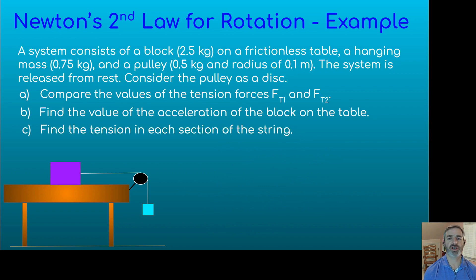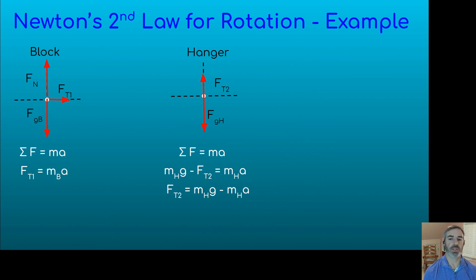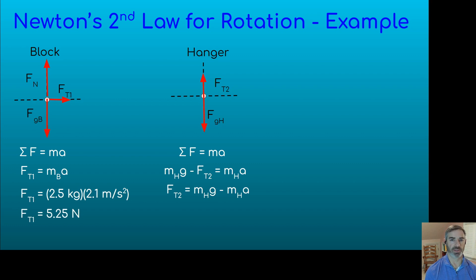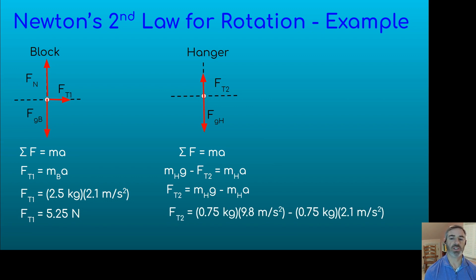For Part C, let's find the tension in each section of the string. We already derived equations for those tension forces when we derived the acceleration expression. Ft1 equals mb times a, and Ft2 equals mhg minus mh times a. Substituting the mass and the acceleration of 2.1 meters per second squared, Ft1 equals 5.25 newtons and Ft2 equals 5.78 newtons. This confirms our answer from Part A: Ft2 is greater than Ft1.